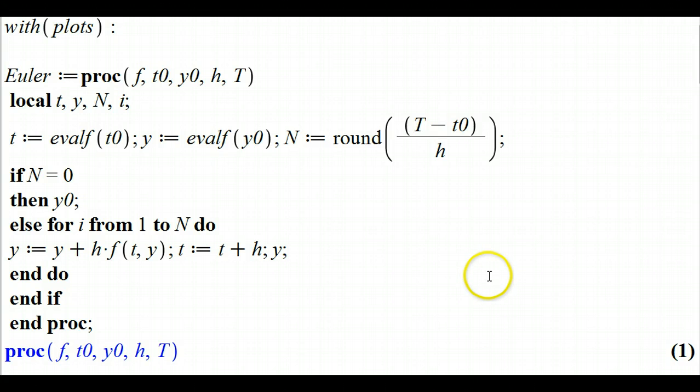So here it is. You're going to define a procedure called Euler. The colon equals uses the definition. Then you're inputting the function f for the right-hand side of your differential equation, your initial time t0, your initial y value y0, your step size h instead of delta t for simplicity and brevity, and then T, which is the time you want to approximate at.